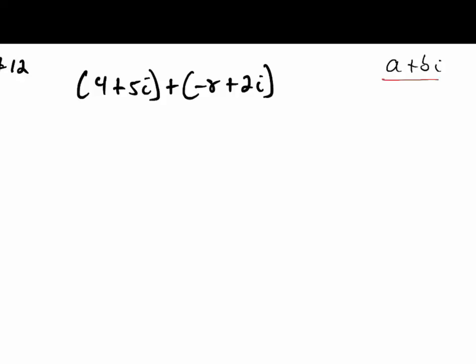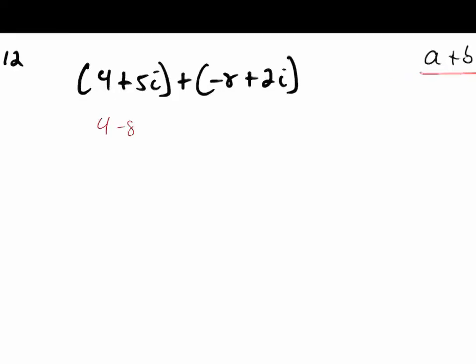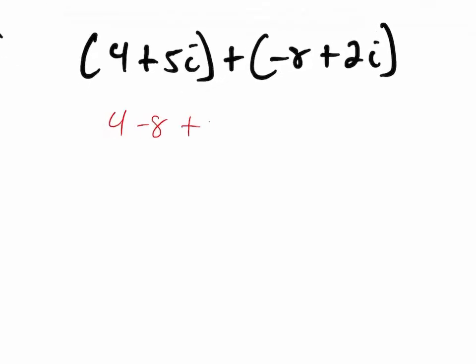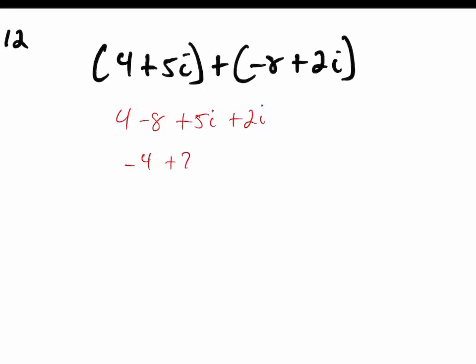Sometimes the easiest thing to do is just to separate them. I just grouped the A parts and the B parts. So 4 minus 8 is negative 4, plus 7i. And that would be your final answer for number 12.